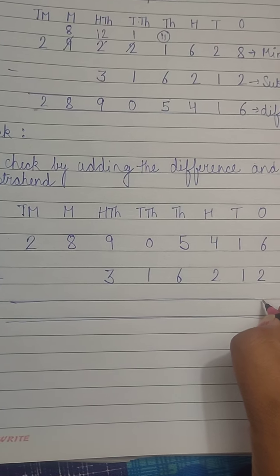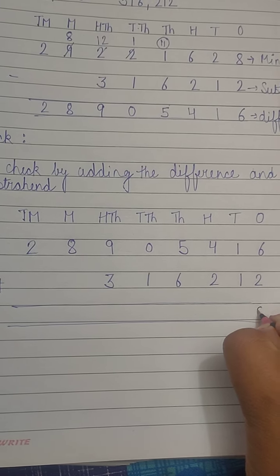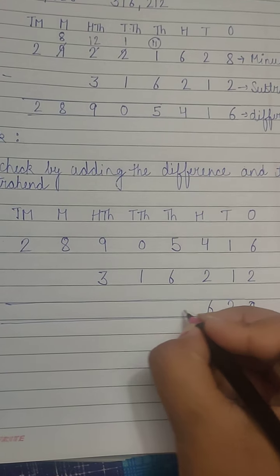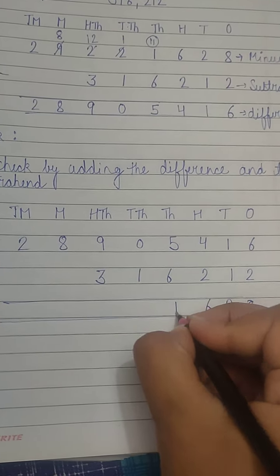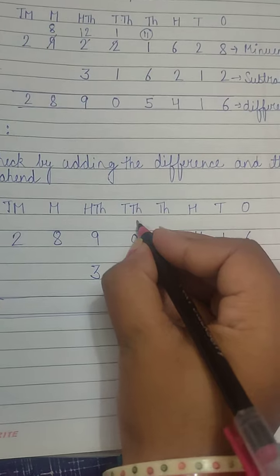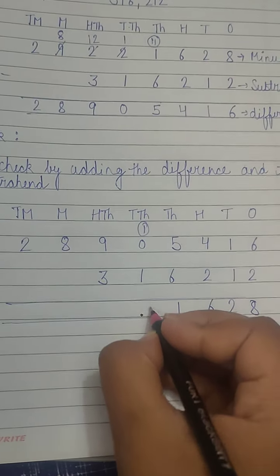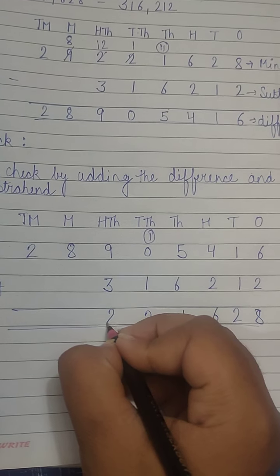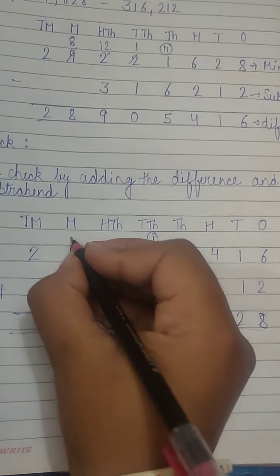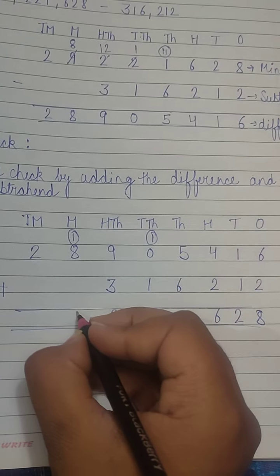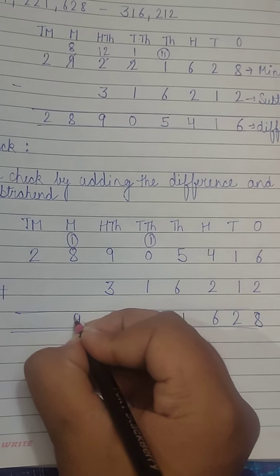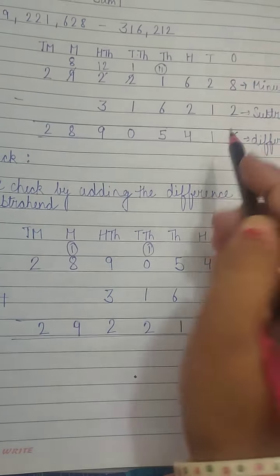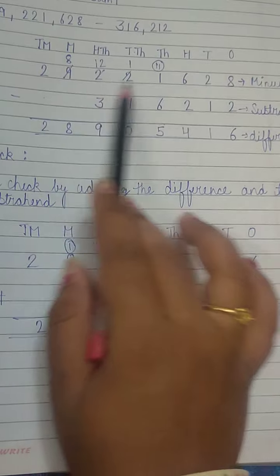6 plus 2 will be 8. Next, 1 plus 6, then 6 plus 5 will be 11 — 1 will be carried. 1 plus 1 will be 2. 9 plus 3 will be 12 — 1 will be carried. 8 plus 1 will be 9. And here we are left with 2. You can see this is the same minuend: 2, 9, 2, 2, 1, 6, 2, 8.